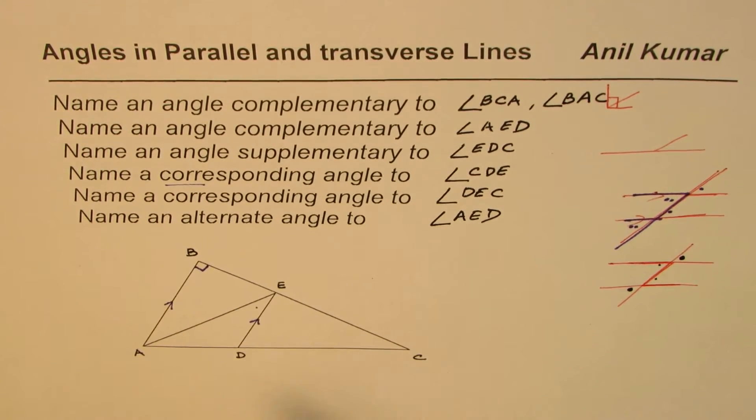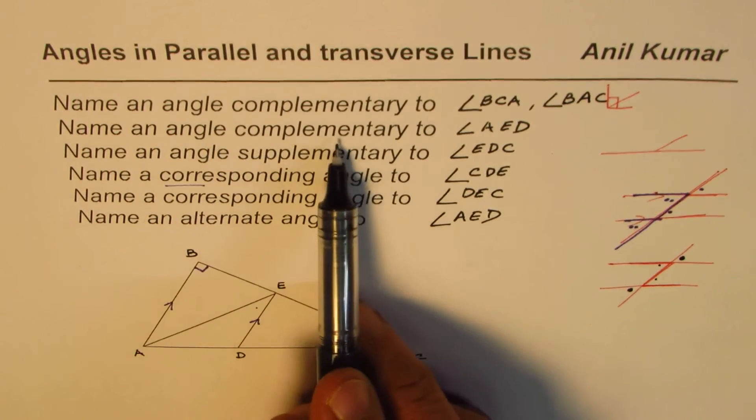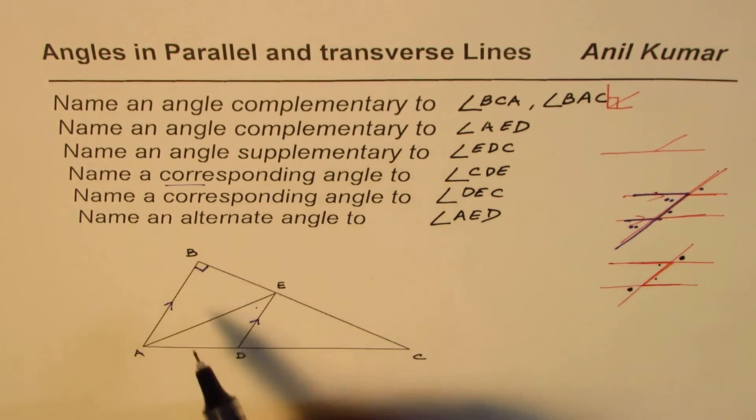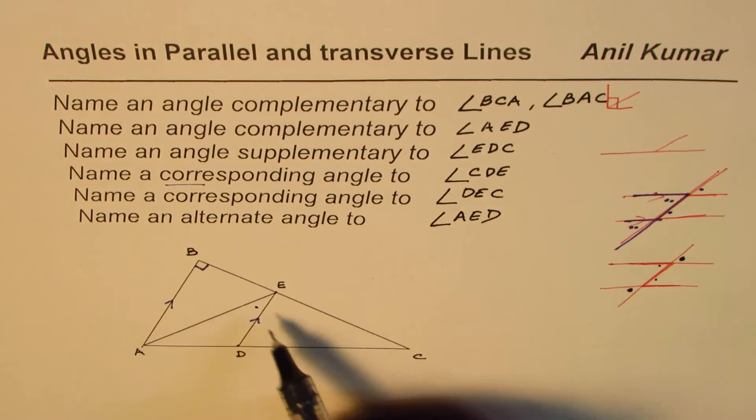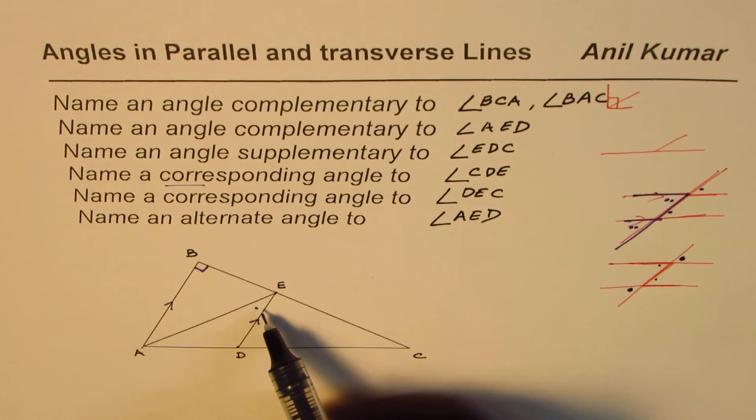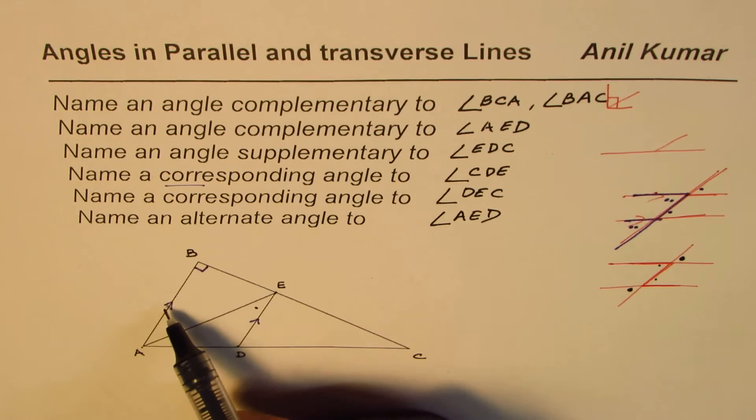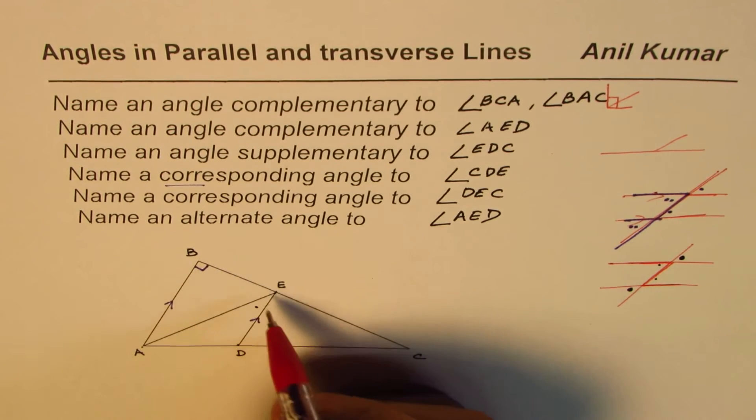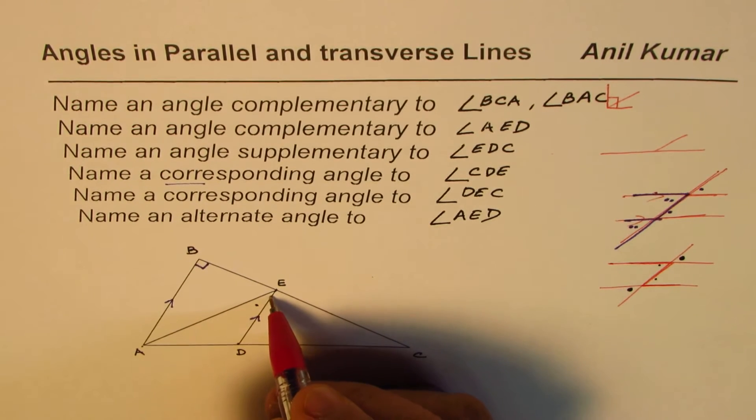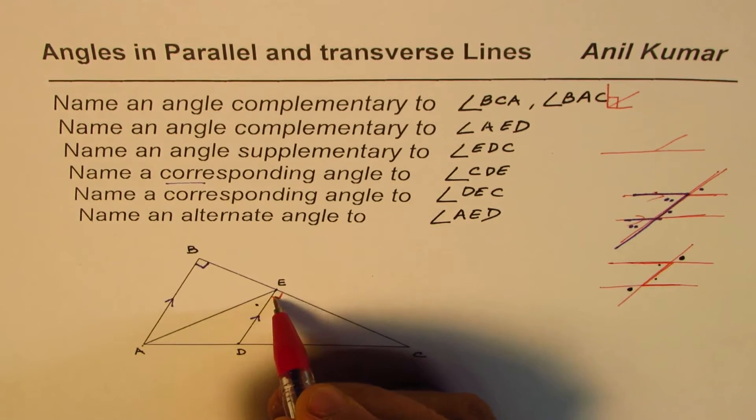We have a similar one here which says name the angle complementary to AED. A, E, and D, this angle. Now what is complementary to this one? If you see these two lines are parallel, then you will observe that this angle 90 should also be equal to this angle 90. These are corresponding angles. Now that forms a linear pair so this side is also 90 correct.